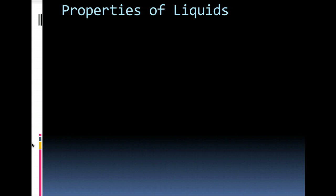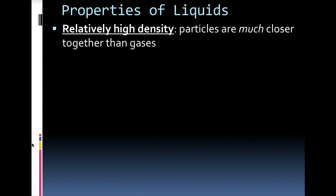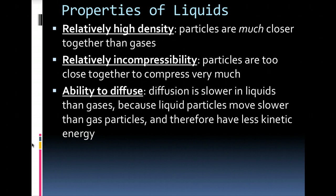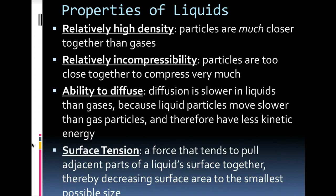Now, some properties of liquids that you may have heard of before. They have relatively high density. Compared to gases, the particles in liquids are a lot closer together, so therefore they have more mass in the same amount of space as a gas. They have relatively low incompressibility. You can't squish the particles of a liquid together closer together, so they do not compress very much at all. They do have the ability to diffuse, but it's slower in liquids because the liquid particles are moving slower than gas particles, and so therefore they have a little less kinetic energy. They have what we call surface tension. Surface tension is the force that tends to pull the liquid molecules together right at the surface of the liquid, and it decreases the surface area to the smallest possible size. This is why water beads up on your skin, or drops of water can stick to a penny. It's due to surface tension.